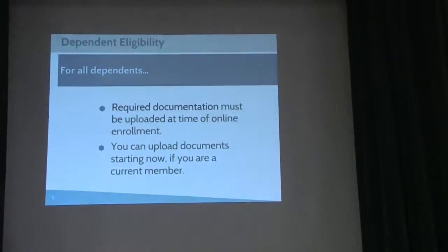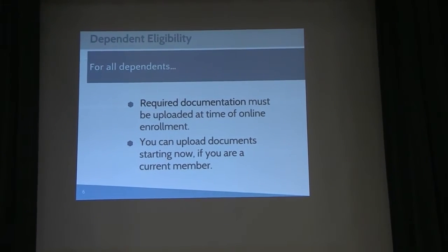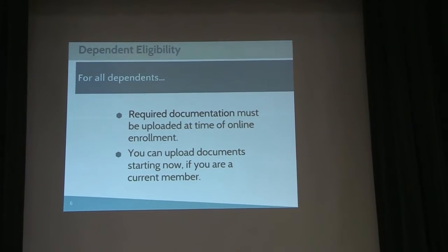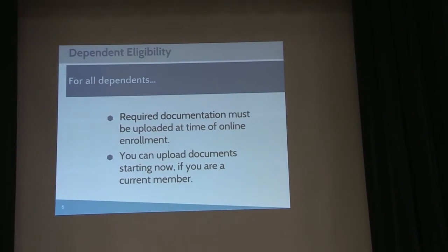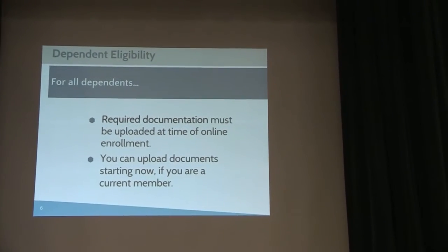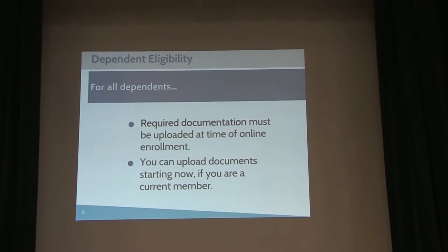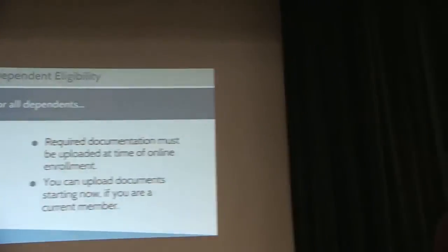If you have dependents that you want to enroll this year, we are doing what's called a dependent eligibility audit. We probably did this about three or four years ago the last time. This is a process that most insurance plans do fairly frequently to make sure that those dependents covered under the plan are truly your dependents — showing that it's your spouse or your child.